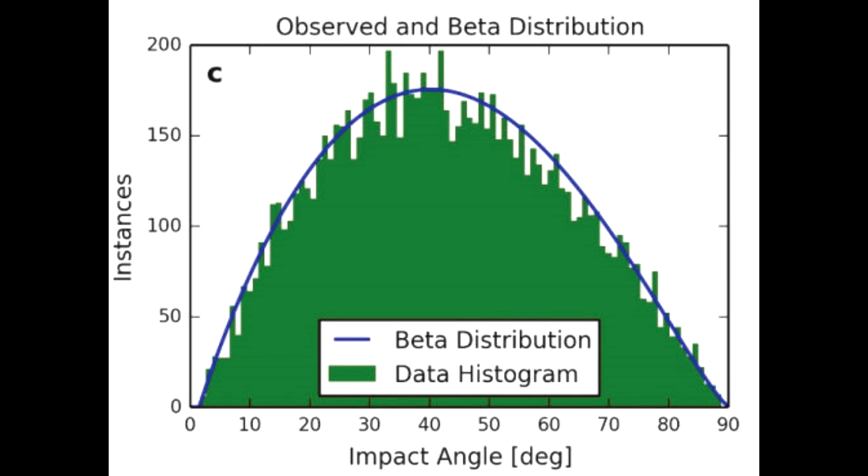So, the median impact angle should be 45 degrees with about half being above and half being below. 25% of the impacts should actually hit at angles below 30 degrees. So, it's not intuitive that craters should be almost all cleanly circular.